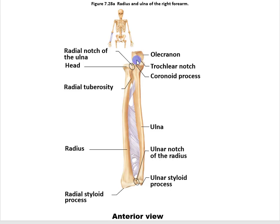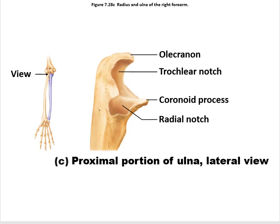Within the ulna proximally, it has a C-shaped structure. That C-shaped structure consists of the olecranon, also known as the olecranon process, the trochlear notch on the surface, and the front lip of the C, which is the coronoid process. All those parts articulate with particular components of the humerus, which we've already seen.